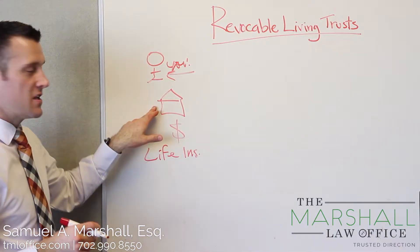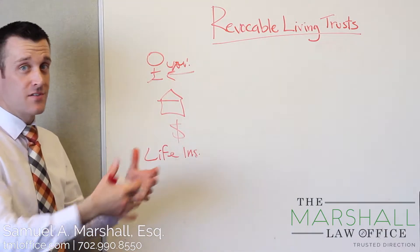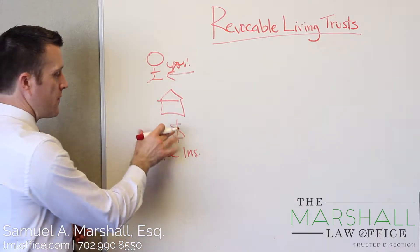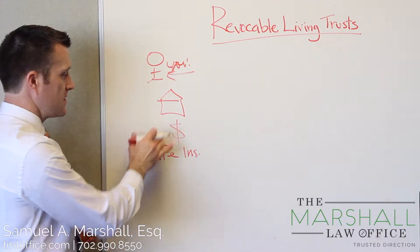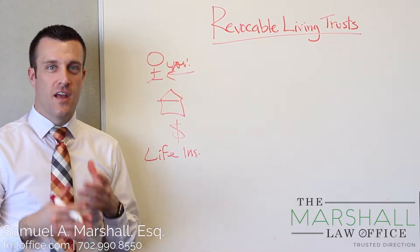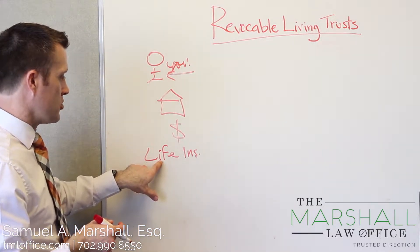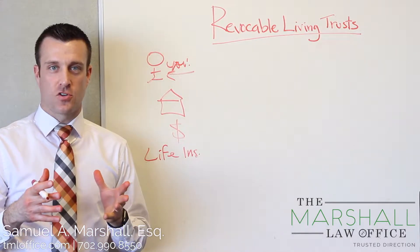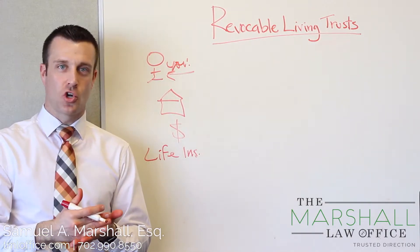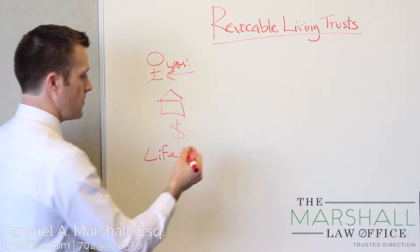After you've passed away, the only way to transfer title of this house from your name into whoever's getting the house is for your family to go through probate. The only way for your family to get access to this money, if there's more than $25,000 in there, is through probate. And if you have minor children who are receiving a substantial life insurance policy, and you haven't spelled out when they get it, who's in charge, things like that, you're going to have some issues.